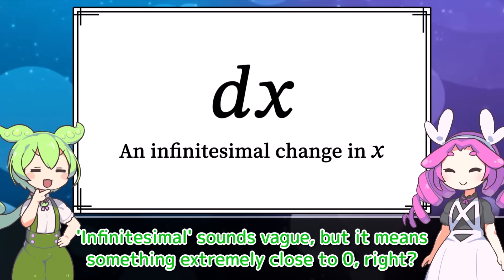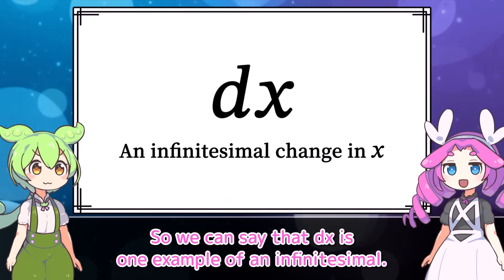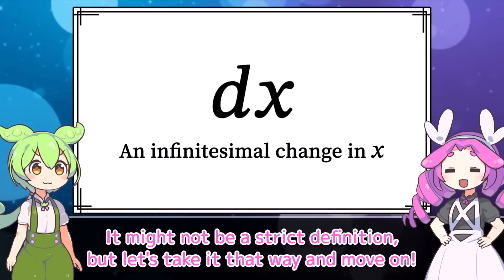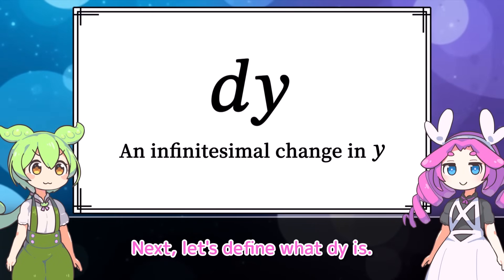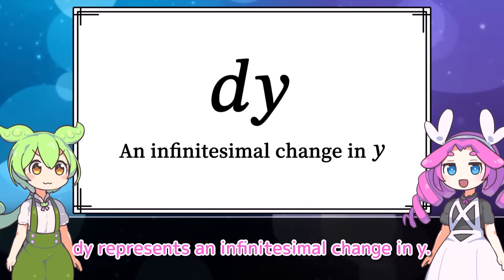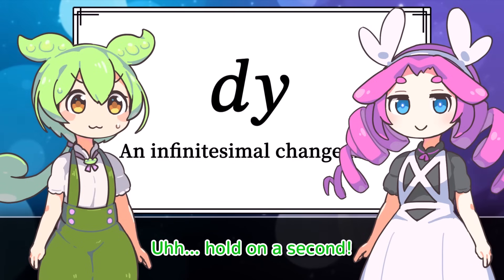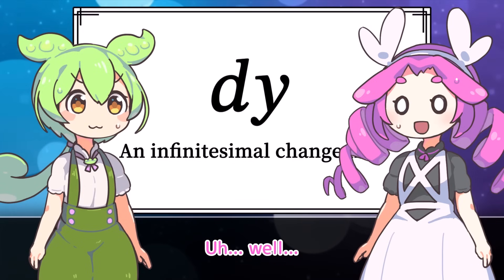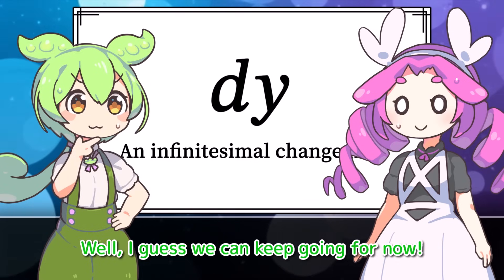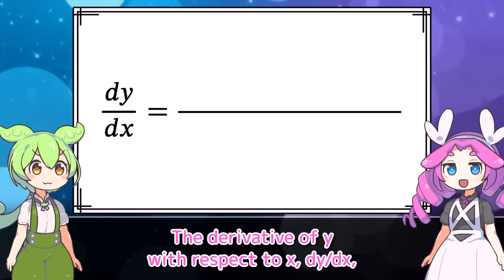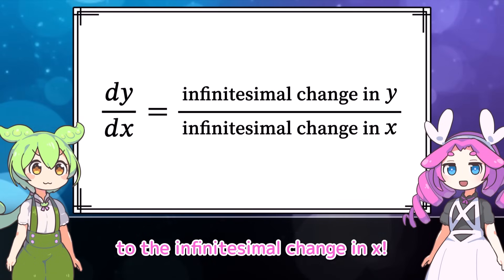Infinitesimal sounds vague, but it means something extremely close to zero. So we can say that dx is one example of an infinitesimal — it might not be a strict definition, but let's take it that way and move on. Next, let's define what dy is. Just like dx, dy represents an infinitesimal change in y. So dy is also an infinitesimal but a different one from dx. Now let's define differentiation. The derivative of y with respect to x, dy by dx, represents the ratio of the infinitesimal change in y to the infinitesimal change in x.